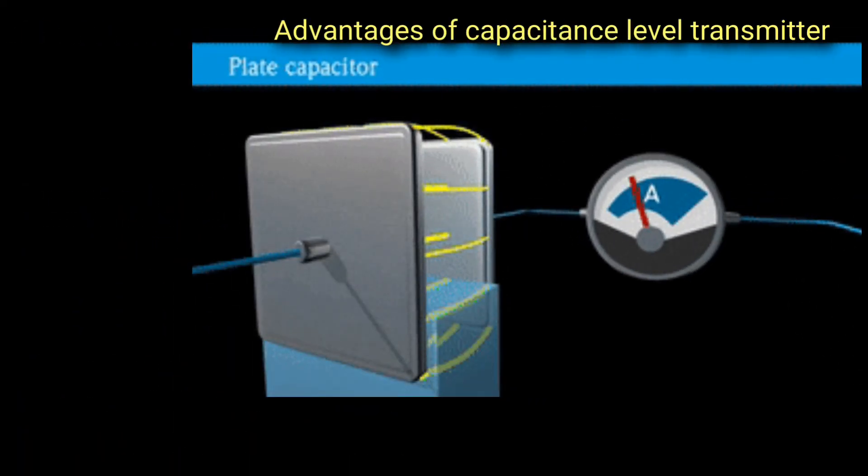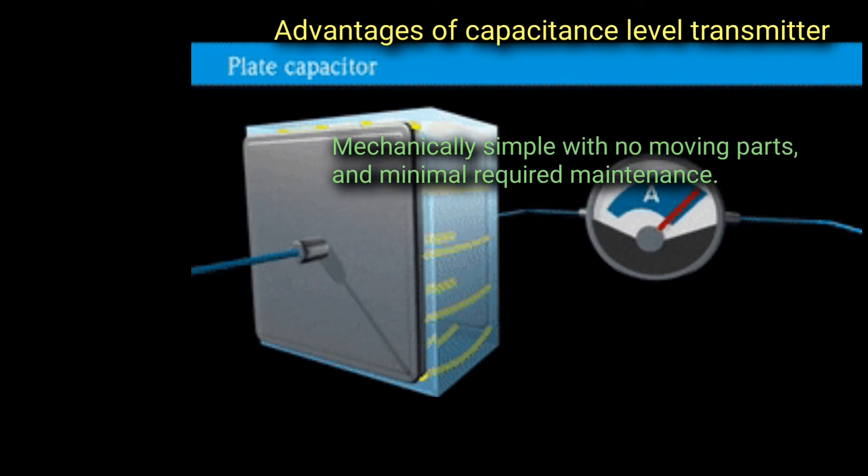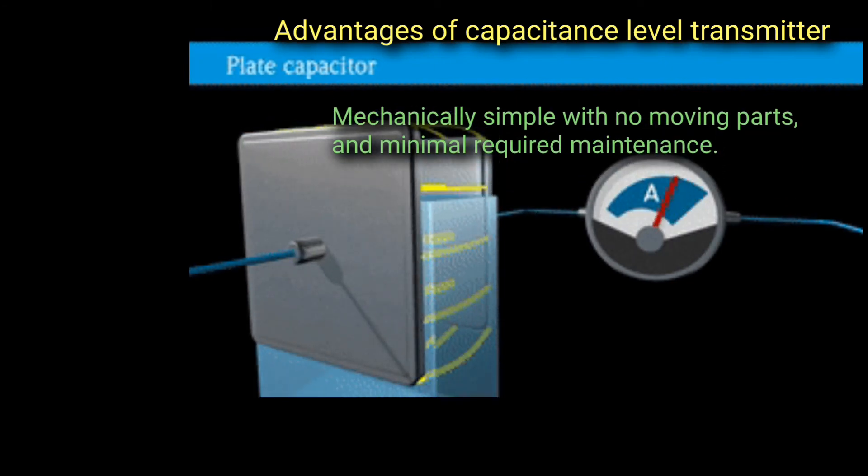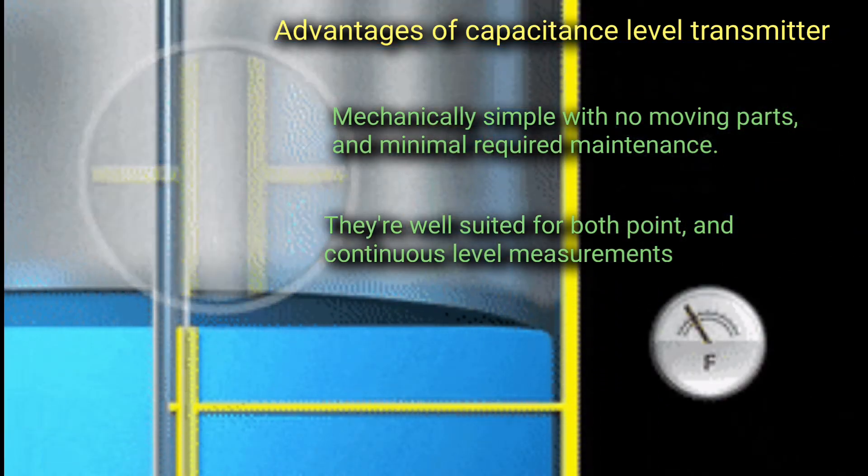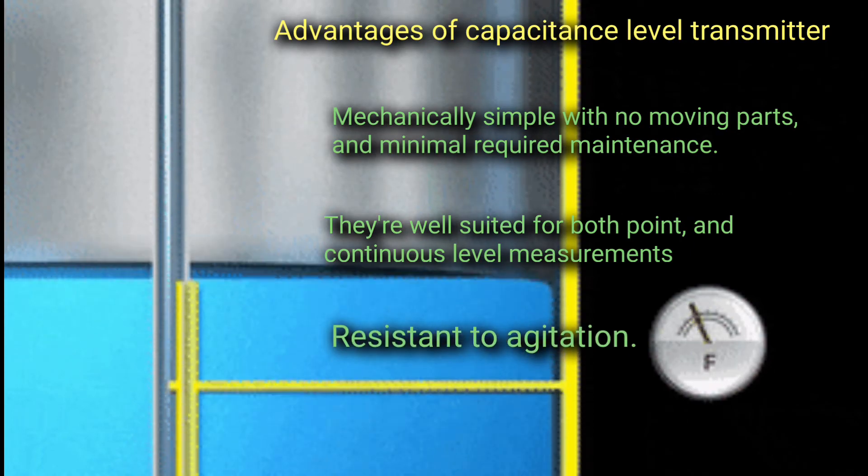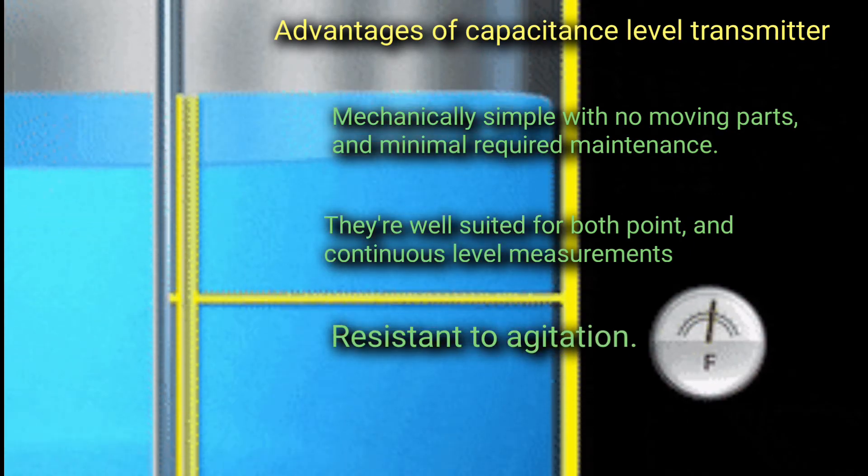Advantages of capacitance level transmitter: Mechanically simple with no moving parts and minimal required maintenance. They are well suited for both point and continuous level measurements. Resistant to agitation.